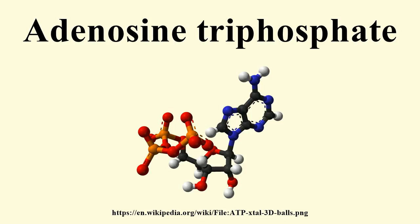Two phosphoanhydride bonds in an ATP molecule are responsible for the high energy content of this molecule. In the context of biochemical reactions, these anhydride bonds are frequently, and sometimes controversially, referred to as high energy bonds. Energy stored in ATP may be released upon hydrolysis of the anhydride bonds. The primary phosphate group on the ATP molecule that is hydrolyzed when energy is needed to drive anabolic reactions is the gamma-phosphate group, located farthest from the ribose sugar, which has a higher energy of hydrolysis than either the alpha or beta-phosphate.